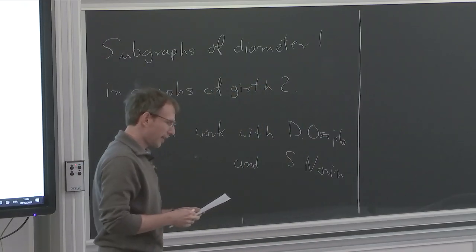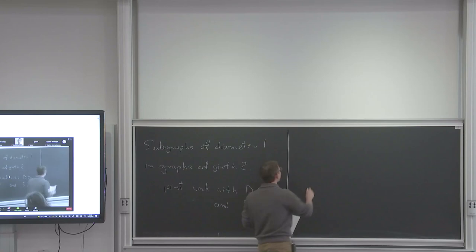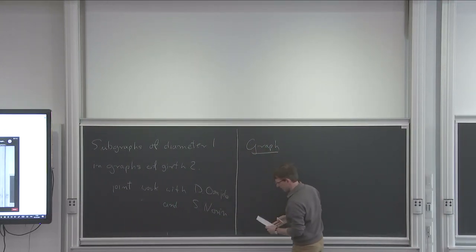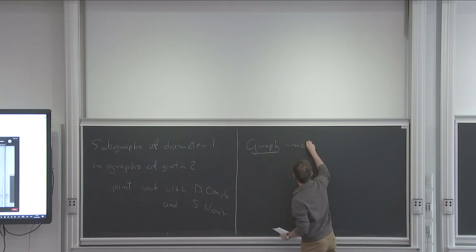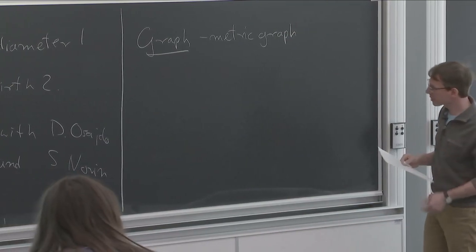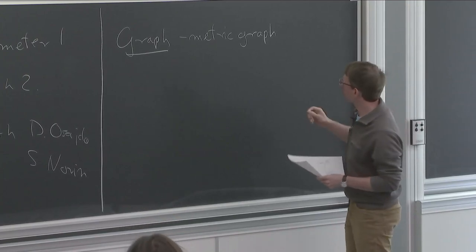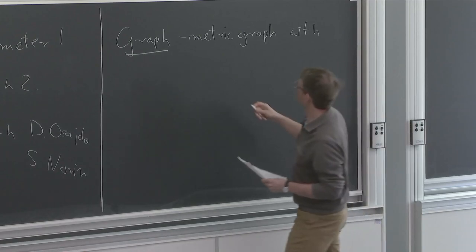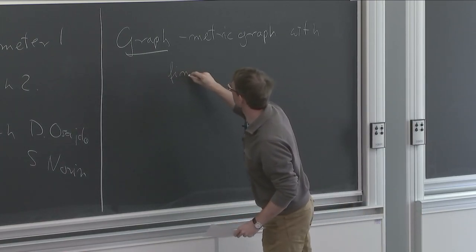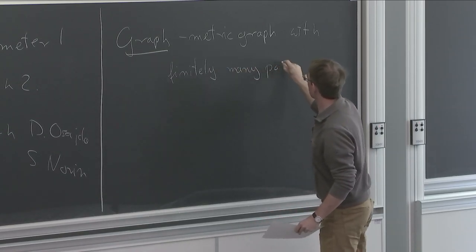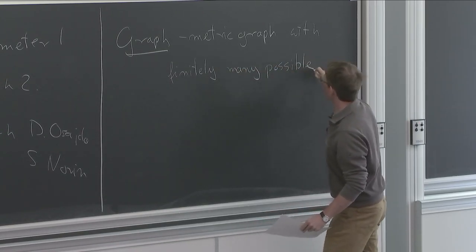Let's first say what graphs are. A graph for us is a metric graph — a metric space that contains vertices and edges. It might be infinite, but we require that the possible edge lengths are finite, so with finitely many possible edge lengths.